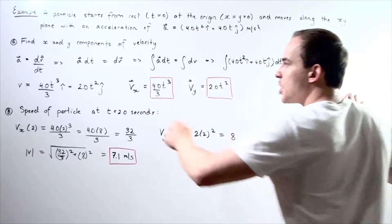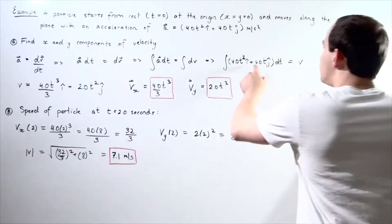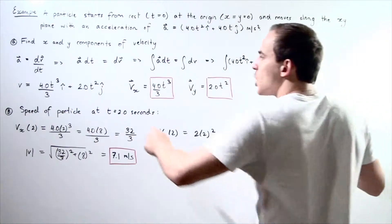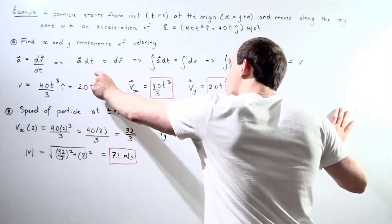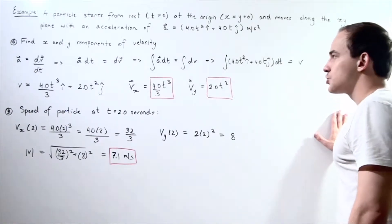becomes 4.0t cubed divided by 3. And 4.0t squared divided by 2. So it becomes 2.0t squared.